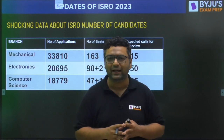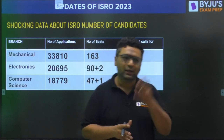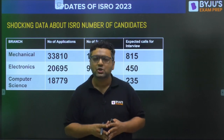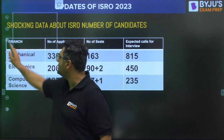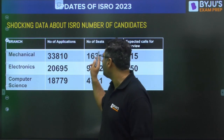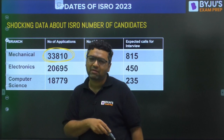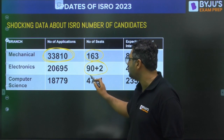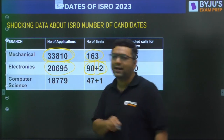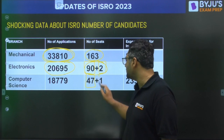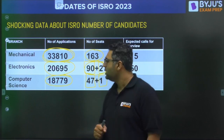Some of our students applied for an RTI to know the number of applicants who had applied for the post, and they shared the data with us. For Mechanical, there were 163 seats and 33,810 students applied. For Electronics, 90 plus 2 seats — where 2 were in the autonomous body separately — and 20,695 people applied. For Computer Science, 47 plus 1 seats, and 18,779 people applied.